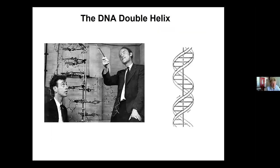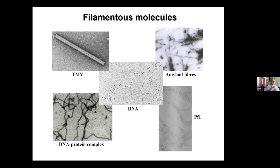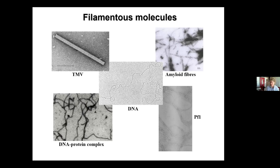The key thing about filamentous molecules is that if you imagine a bowl of spaghetti and you put your hands into it and pull, all the spaghetti between your hands will line up. That's not crystallization - it's increased order. You've lined up all the molecules parallel, introducing order along the length of the alignment. About that axis it's randomly oriented - what you'd call cylindrical averaging. You've gone from a completely disordered state to one with partial ordering in one direction. That, in a nutshell, is what fibre diffraction is.